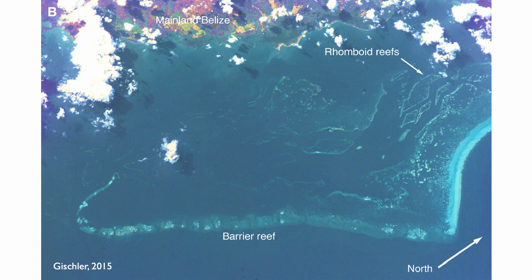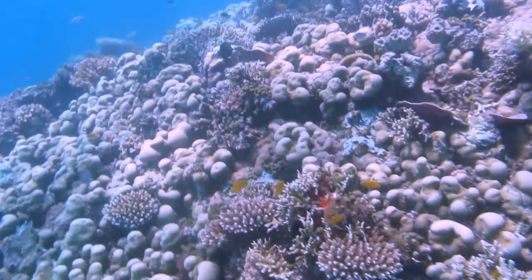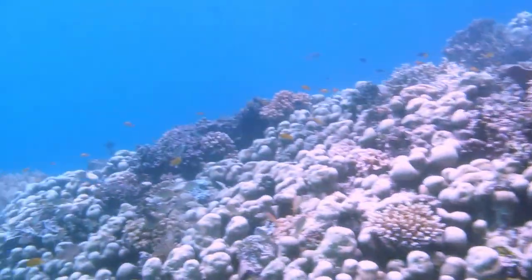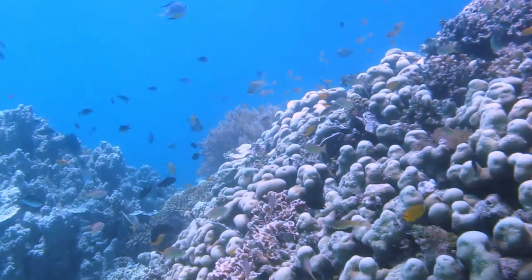The back reef is where the lagoon is, but one thing I want to point out is that you can have reefs or corals in the back reef — those would be known as isolated reefs. They can still form because of shallow water conditions; if there's not too much sediment supply and the water conditions are not too turbid, they can grow pretty well. In Belize we have evidence for rhomboid reefs in the back reef.